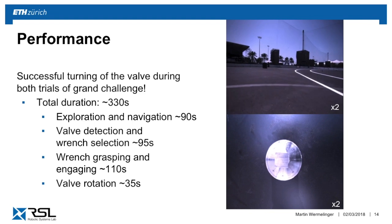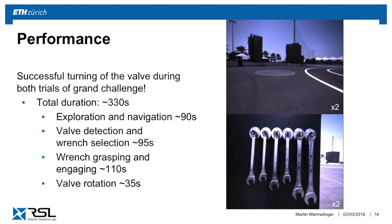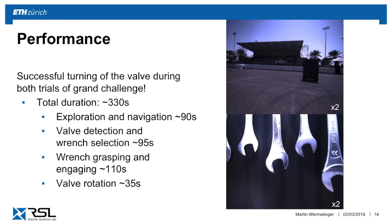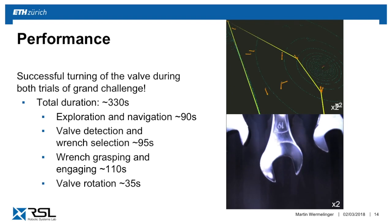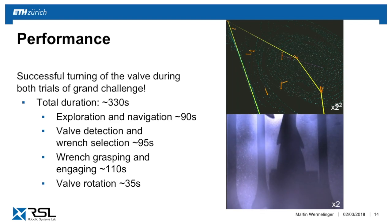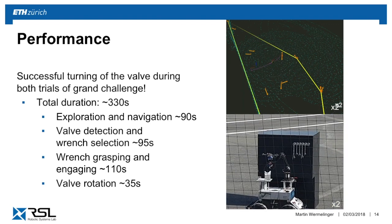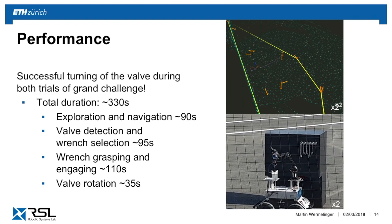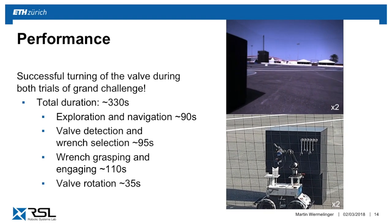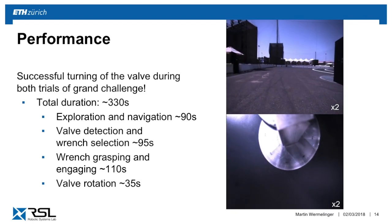Here you can see a brief summary of the navigation and manipulation as seen from the robot's perspective. The complete task lasted just over five minutes. Exploration and navigation took 90 seconds, limited mainly by a reduced turning rate — the added arm raised the center of mass, causing some shaking when turning on the spot. Most of the remaining time was spent on visual servoing, as the arm had to move slowly for continuous tracking of objects on the wrench panel.